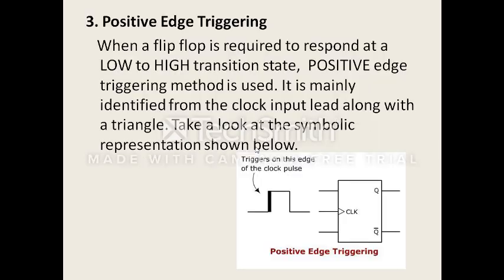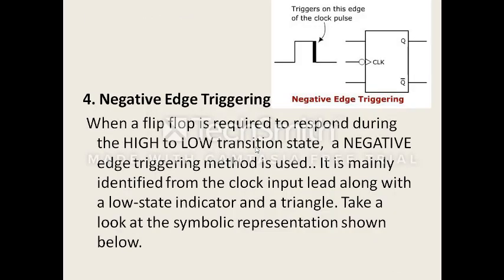Positive edge triggering is similar to high level. We represent it when the signal comes from 0 to 1. In the block diagram, we use a triangle to indicate positive edge triggering. For negative edge triggering, when the signal comes from 1 to 0 — that is, from high to low — it is negative edge triggering, and it is shown with a bubble. When it is positive edge triggering, the input value changes to determine the output. In negative edge triggering, the output value changes based on input when the clock pulse goes low.